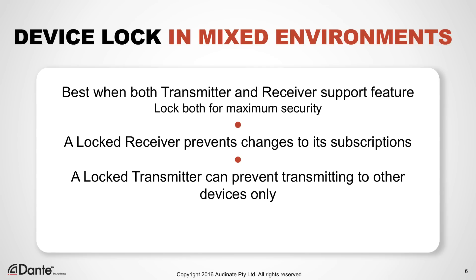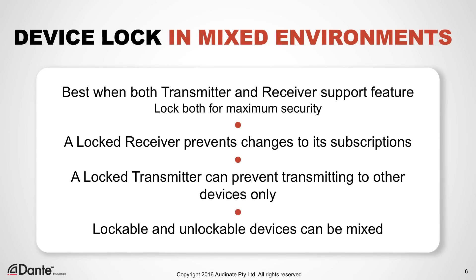This locking will prevent transmission to other receivers. A locked transmitter cannot prevent a receiver from disconnecting, but it can prevent new receivers from being added to its subscriptions, thus conserving available flows. Older devices that do not support Device Lock may still be connected, but may generate error messages when interacting with locked devices. For example, an unlockable transmitter may be connected to a locked receiver, but other connections to this transmitter are always possible.